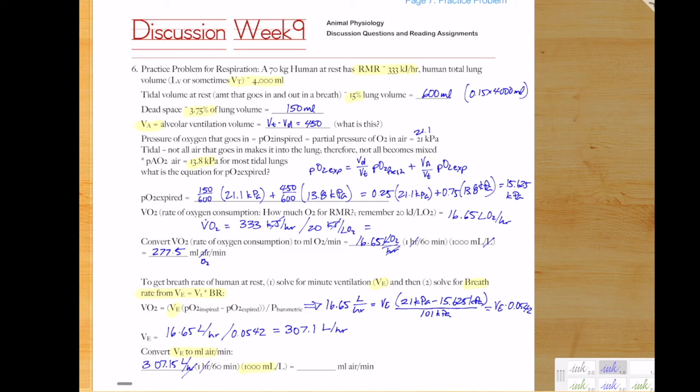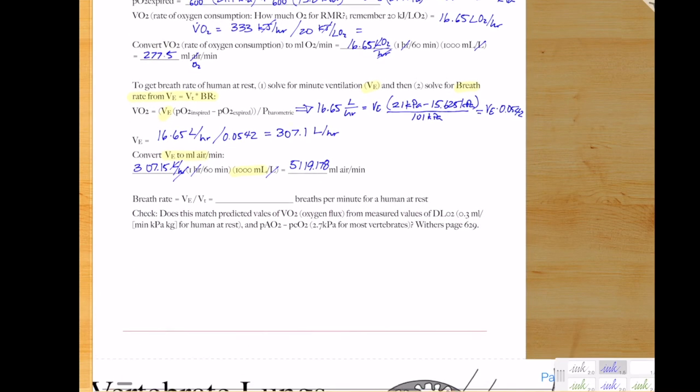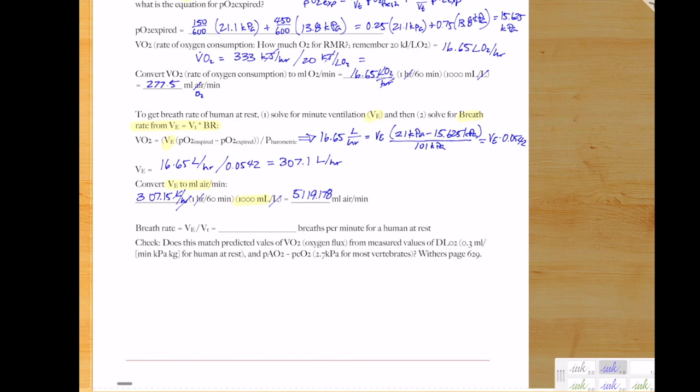Another quick unit conversion. And we get the answer in mls per minute, which is 5119.178. Sucking in 5 liters of air per minute. Wow. Sounds like a lot, right?